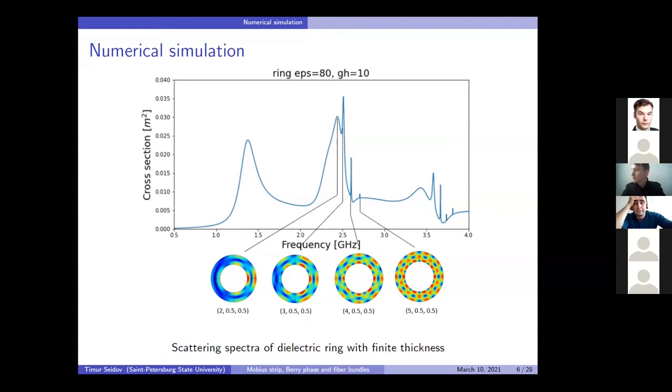Maybe another question related one. What is the polarization of the wave then? Because you have two possibilities for the orientation of electric and magnetic fields. Horizontal polarization. So electric field in the plane of the ring. Okay. Yes, yes. Good.